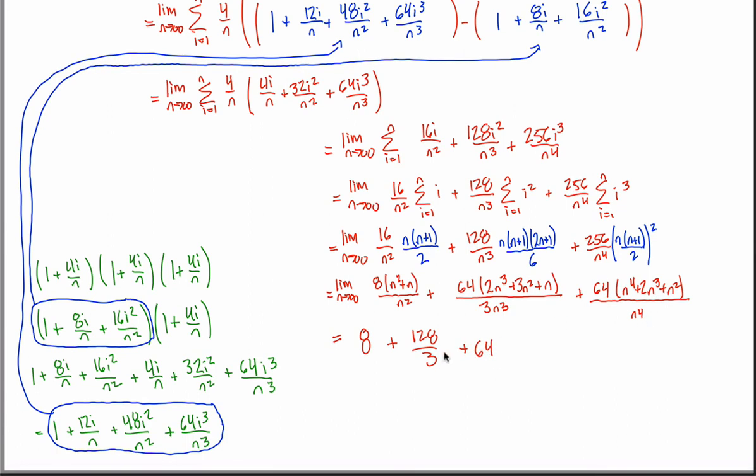So now the kind of annoying step where you're probably just putting this into a calculator. 8 plus 64 is 72. And 72 plus 128 thirds, I don't know what that is. But if I got a common denominator of 3, so there's 216 over 3 plus 128 over 3. I get, what, 344 over 3, which I believe is my final answer.